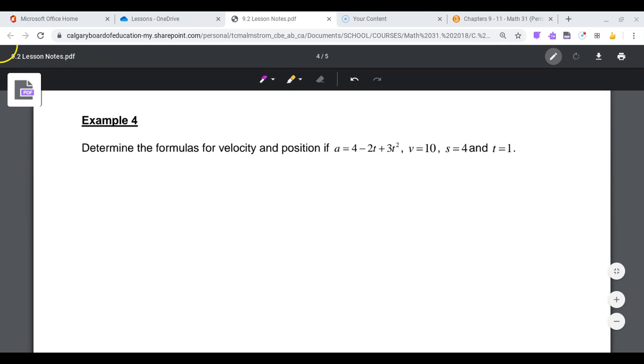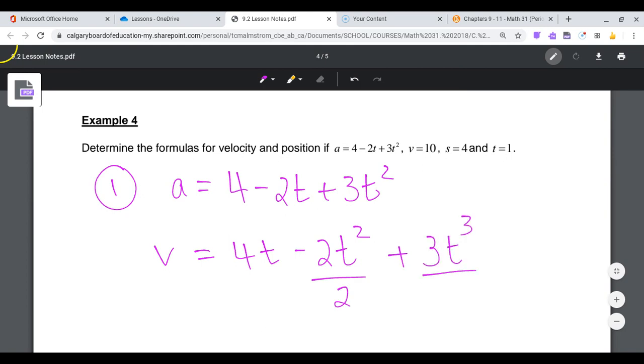So I know acceleration, and to find v, I'm going to take the antiderivative of my acceleration. So v is going to be 4t minus 2t squared over 2 plus 3t cubed over 3 plus some constant c.